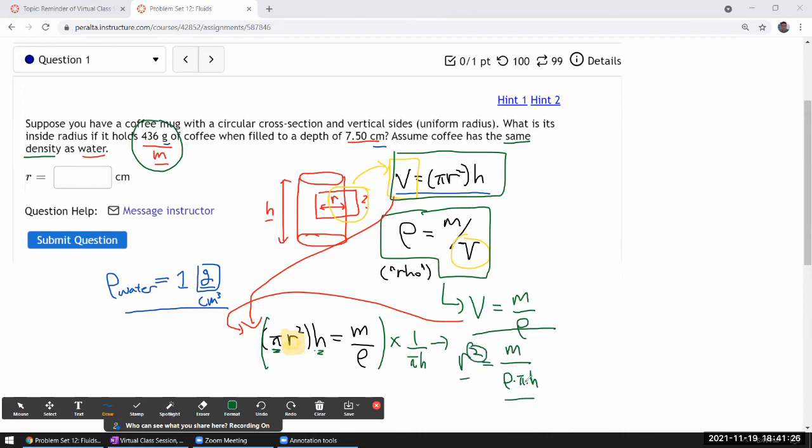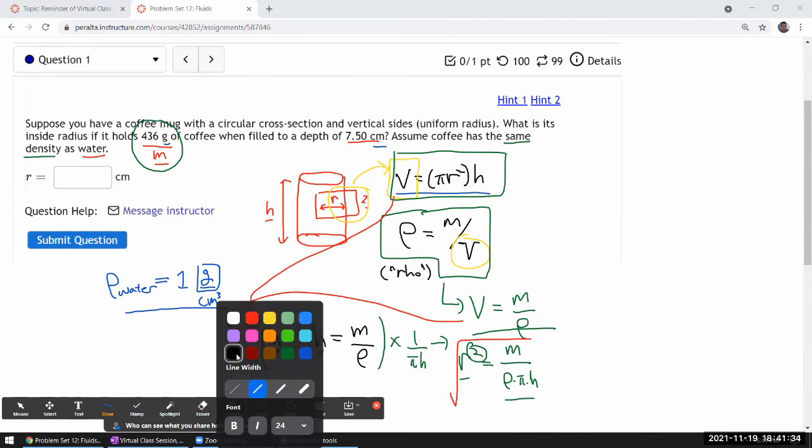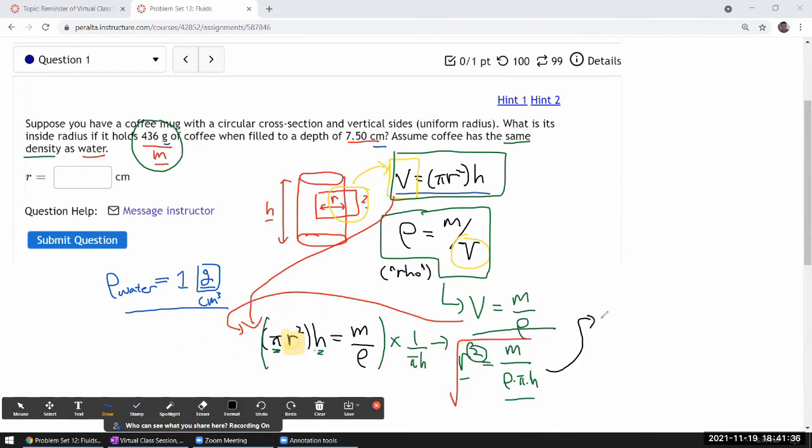So to get rid of this square, I just need to take square root of both sides. So imagine taking square root of the whole thing. After having done that, I get square root of r squared is equal to square root of m over rho times pi times h.